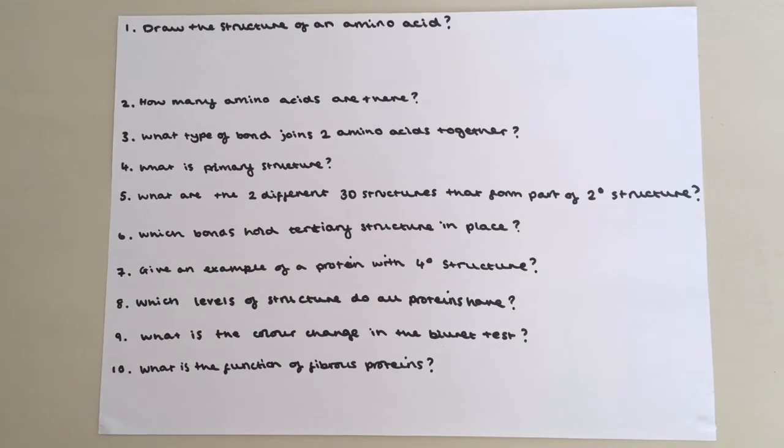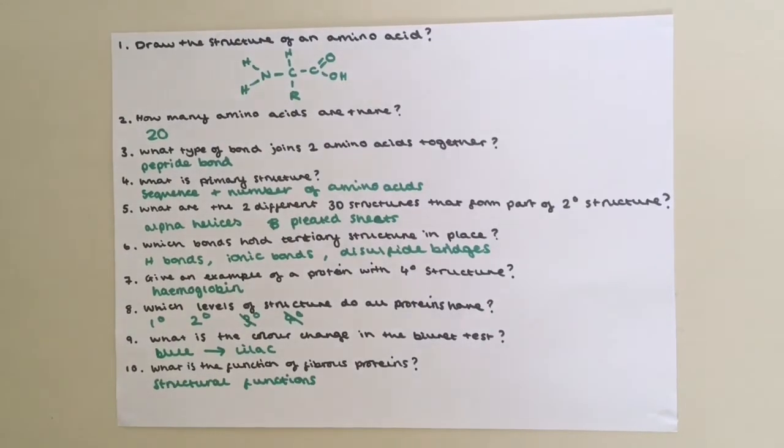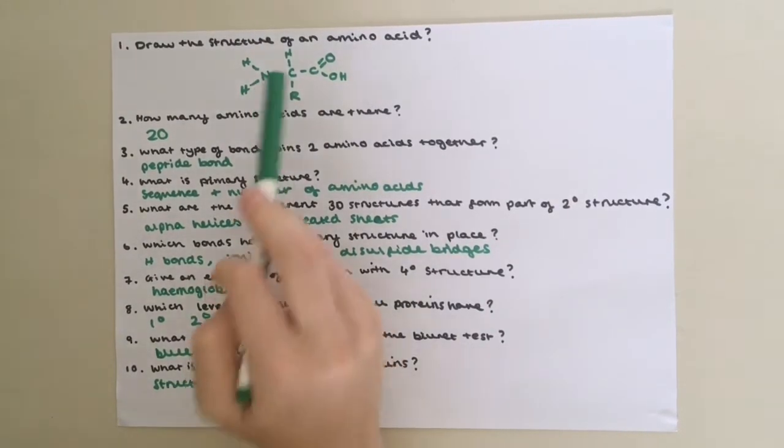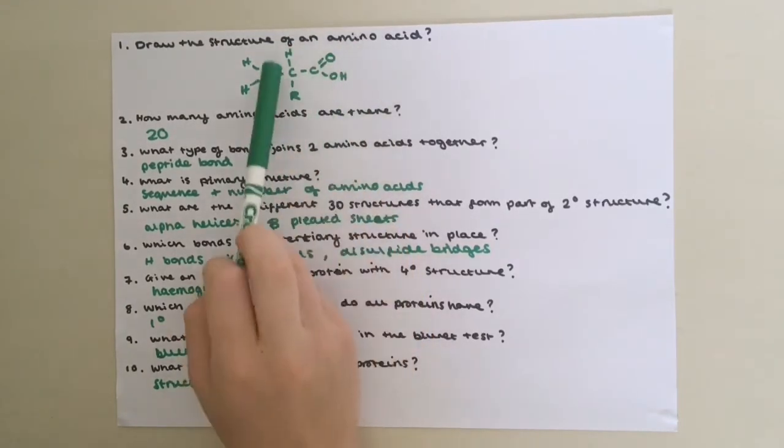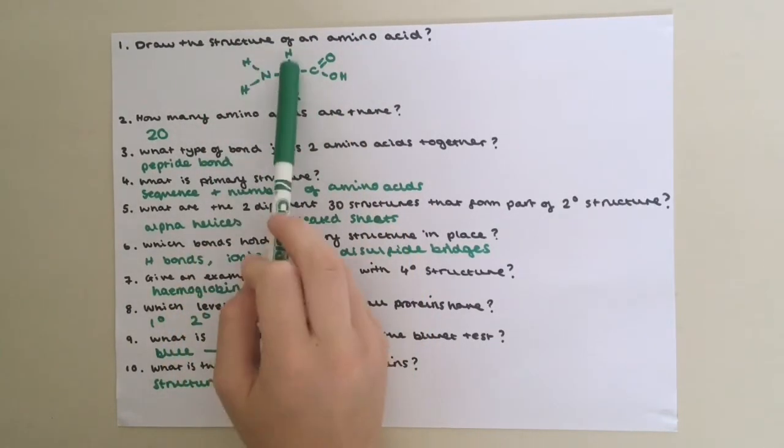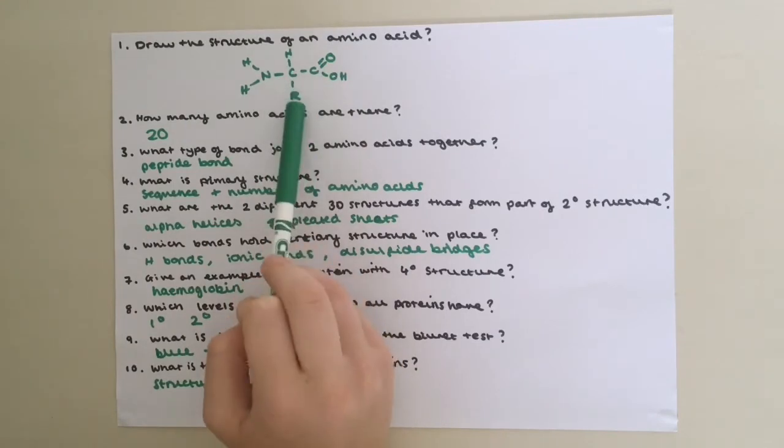Now pause the video and have a go at these questions. Question one: Draw the structure of an amino acid. You have the central carbon bonded to a hydrogen, then you've got this carboxyl group, the amine group, and then the variable side chain represented by R.